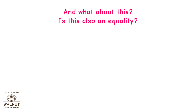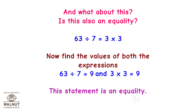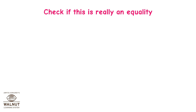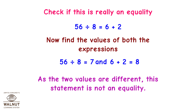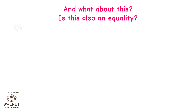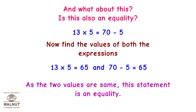Is this also an equality? 63 divided by 7 is equal to 3 into 3. 63 divided by 7 is equal to 9 and 3 into 3 is equal to 9. This statement is an equality. Check: 56 divided by 8 is equal to 6 plus 2. 56 divided by 8 is equal to 7 and 6 plus 2 is equal to 8. As the two values are different, this statement is not an equality. Next: 13 into 5 is equal to 70 minus 5. 13 into 5 is equal to 65 and 70 minus 5 is also equal to 65. As the two values are the same, this statement is an equality.